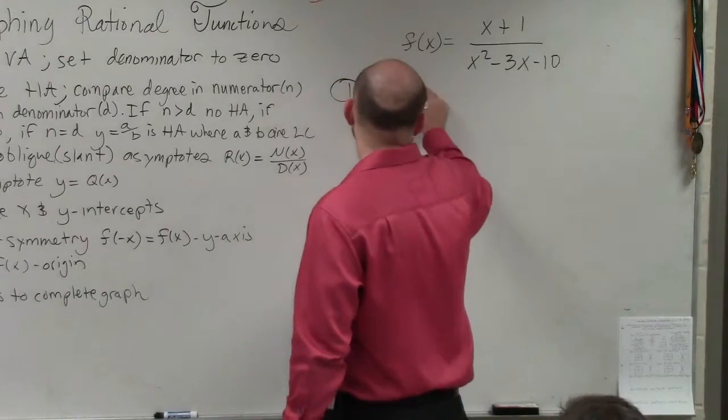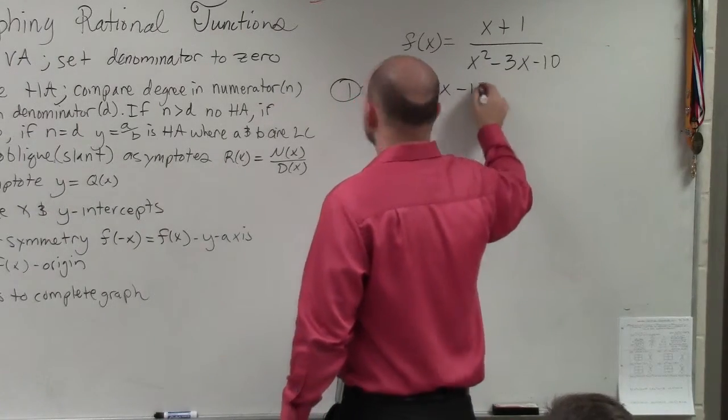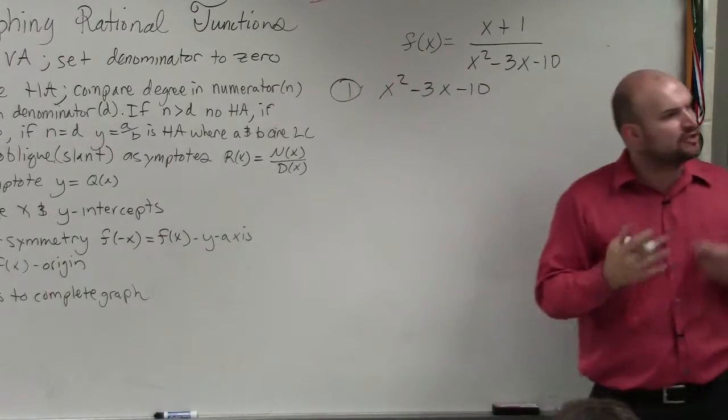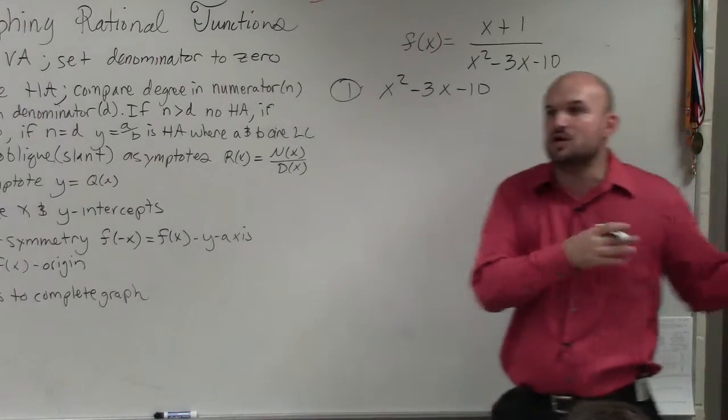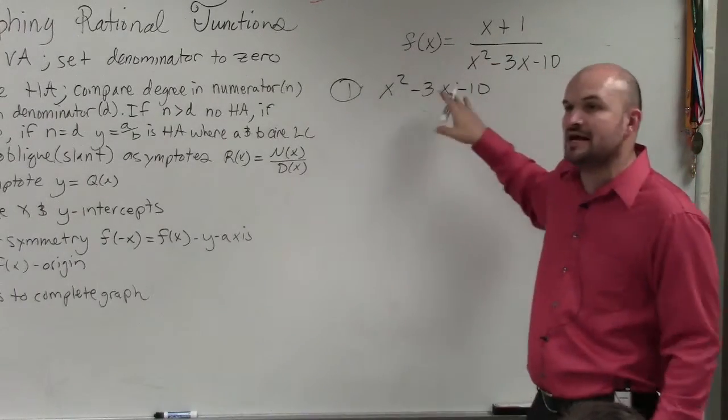If you guys remember, vertical asymptotes, setting it equal to zero, that should be related to finding the domain, right? Because the domain was all real numbers except what makes our denominator equal to zero.